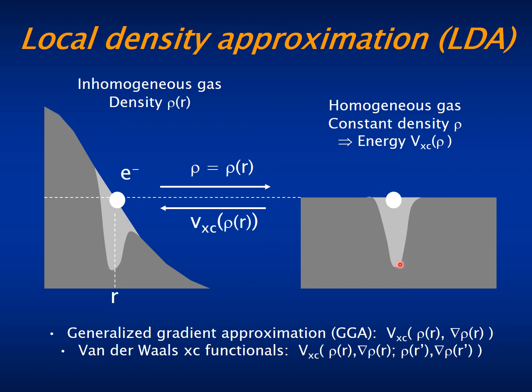This exchange and correlation hole has two parts. The first one is due to the Pauli exclusion principle, which implies that where one electron is, there can be no other electrons, which in reality implies that they cannot be either nearby.